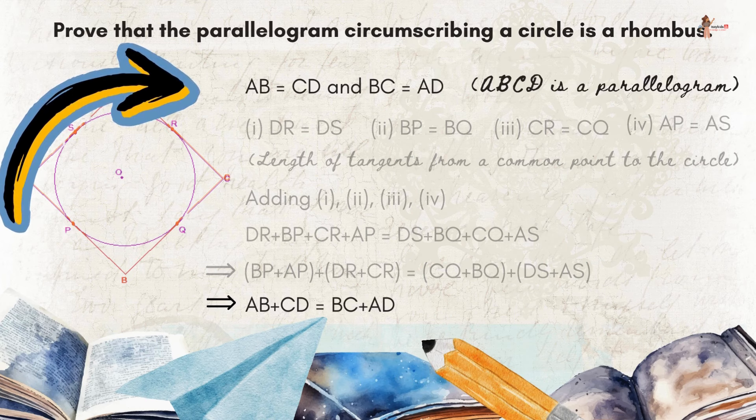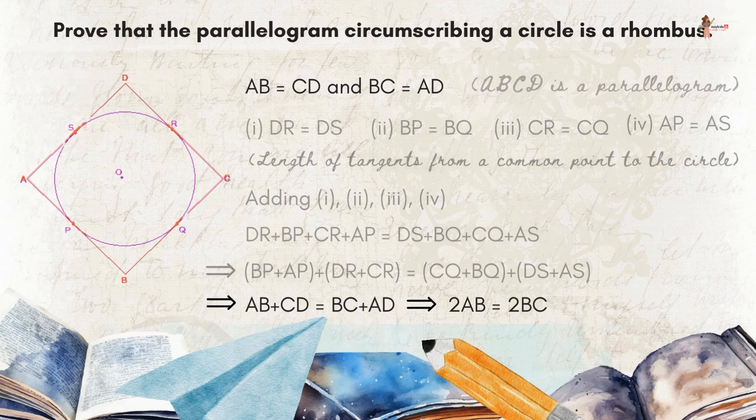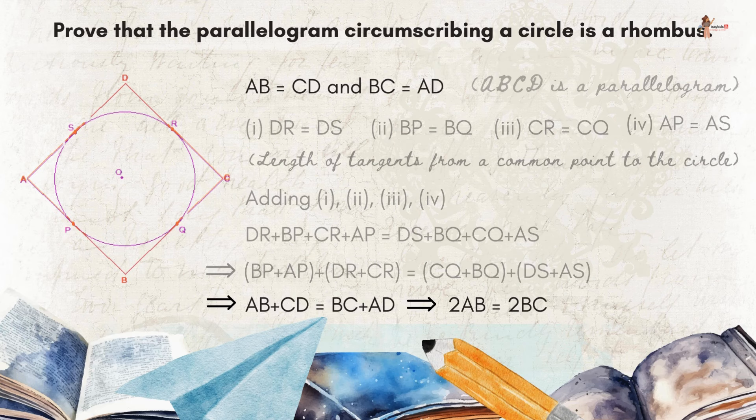Now AB is equal to CD and BC is equal to AD because it is a parallelogram. Therefore we can say that twice of AB is equal to twice of BC, which means AB is equal to BC.